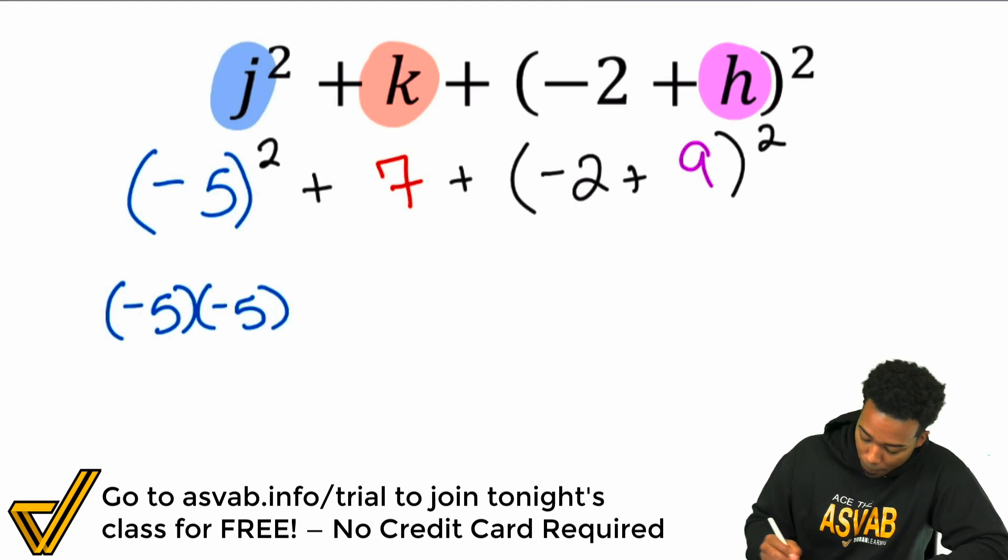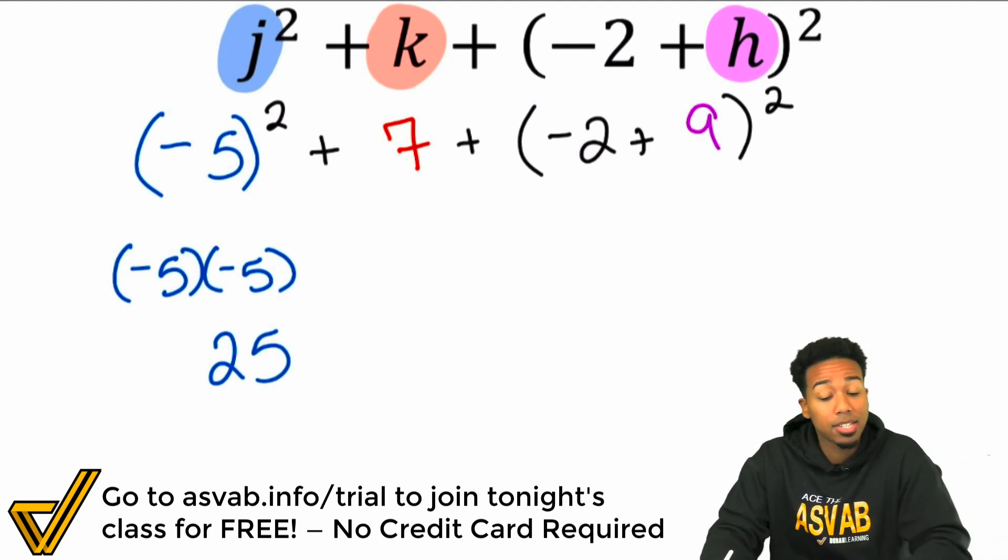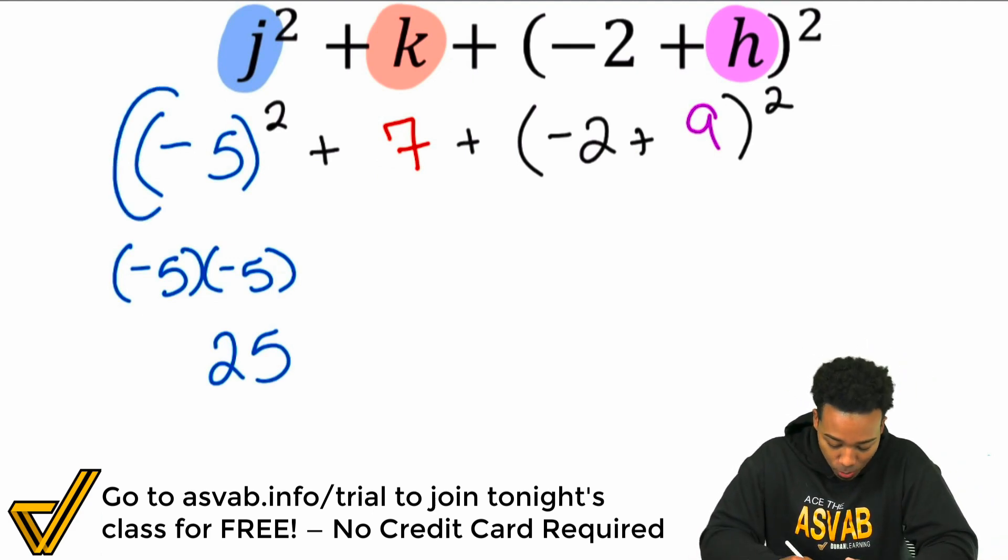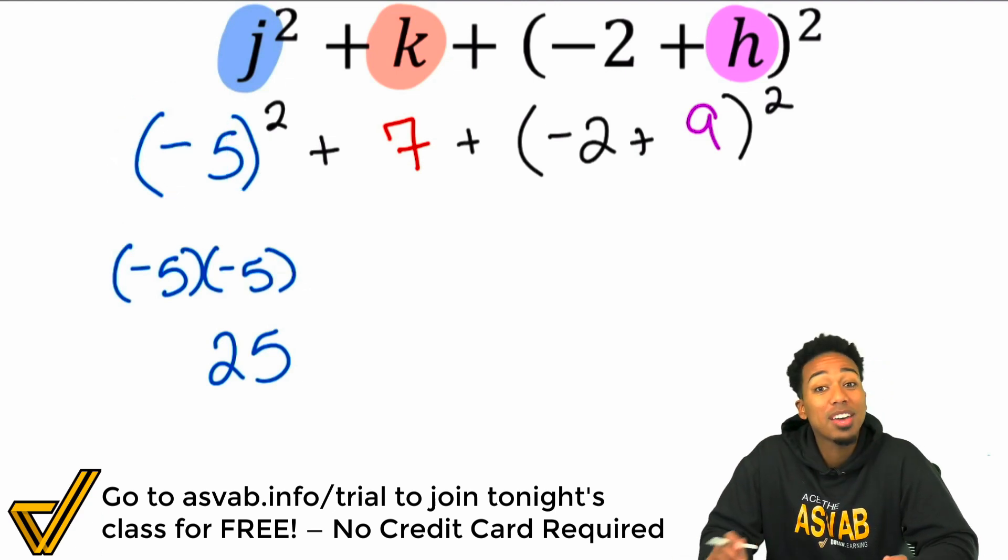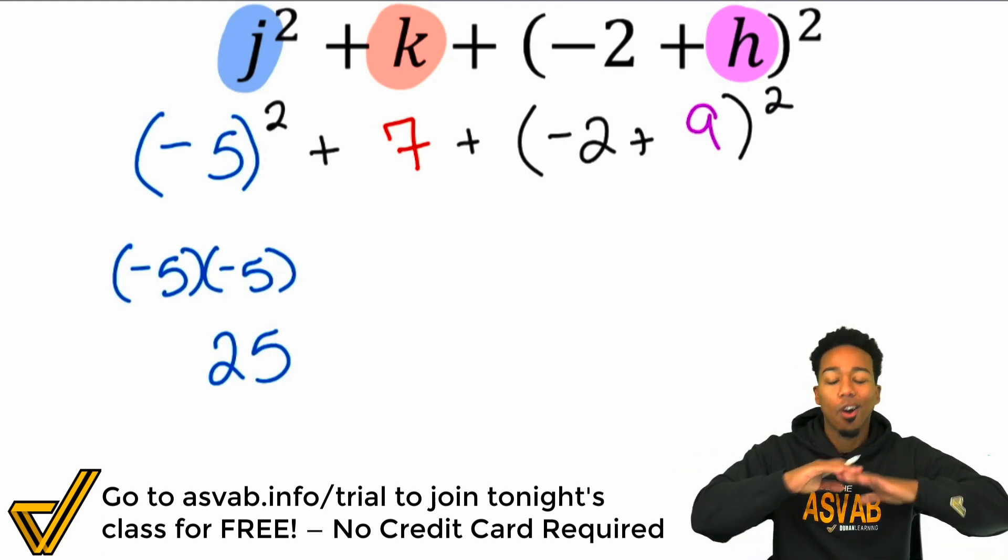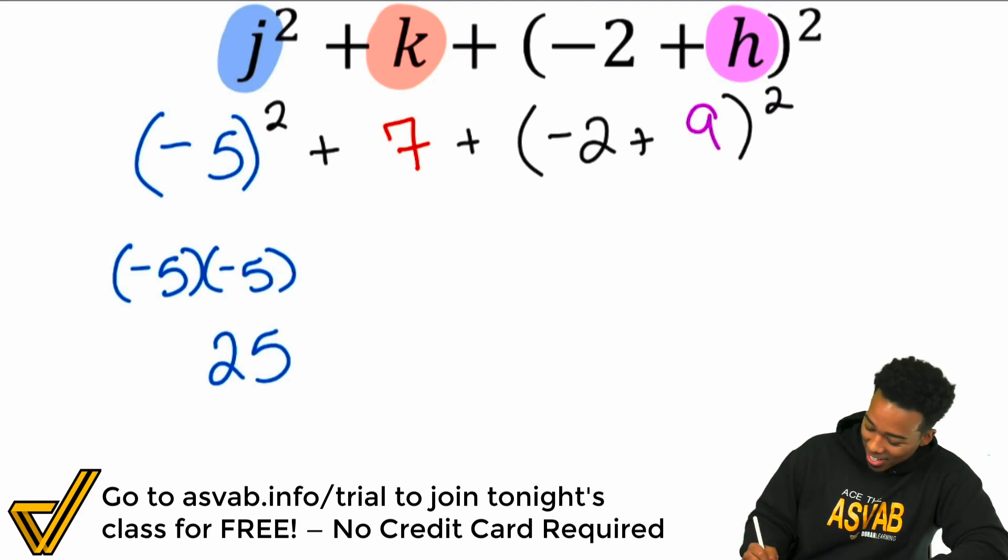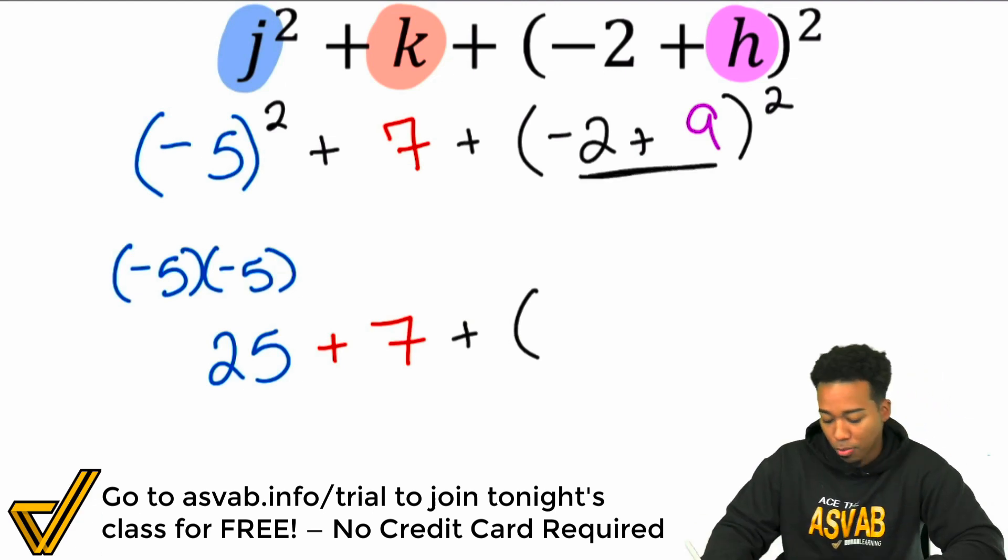So with that said, booyah, what's a negative times a negative? That's going to be a positive 25. Remember guys, if you didn't put the parentheses right here, if you didn't do it, you would have negative 5 squared, 5 squared 25 and you'd have negative 25 and then that would get your answer wrong automatically. So pay attention there. I gotcha. And so next, we're going to go ahead and add that 7. And then from there, we're going to go ahead and figure out what this parentheses is.